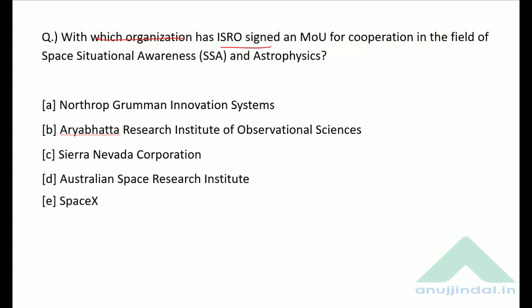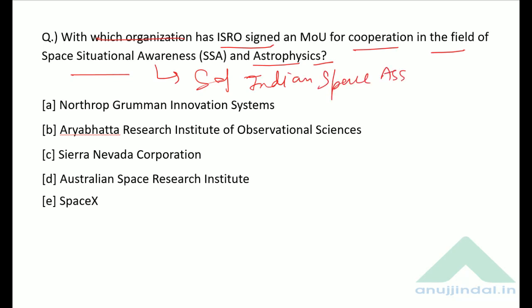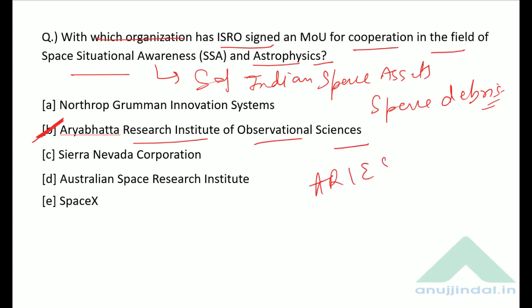With which organization has ISRO signed an MOU for cooperation in the field of space situational awareness and astrophysics? This MOU aims at safeguarding Indian space assets from space debris. The MOU has been signed with ARIES — the Aryabhatta Research Institute of Observational Sciences.